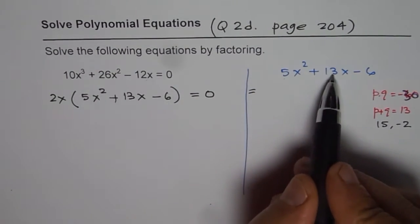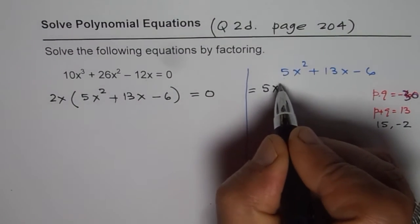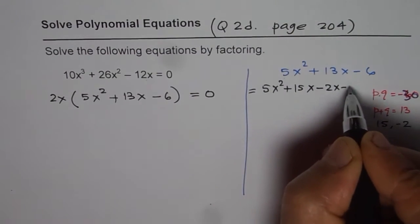So, what we can do here is, we can write 13x as combination of these two. So, we have 5x squared plus 15x minus 2x minus 6.